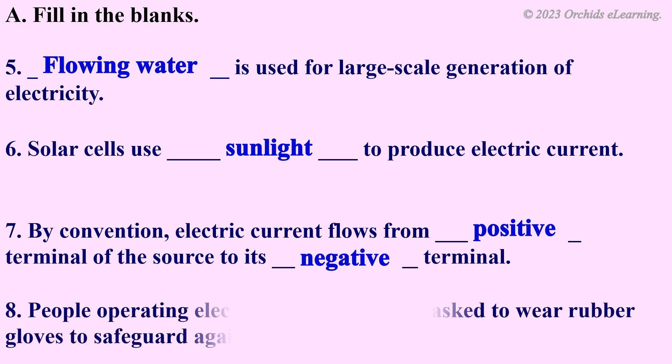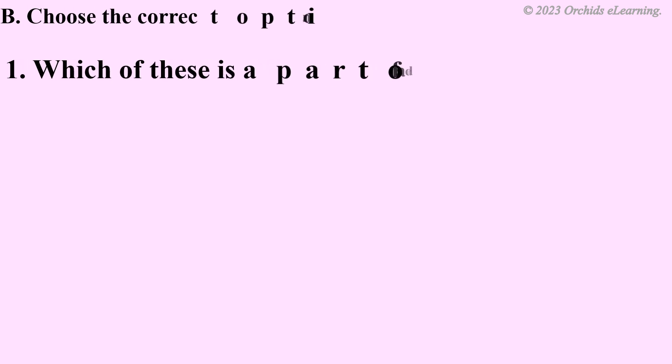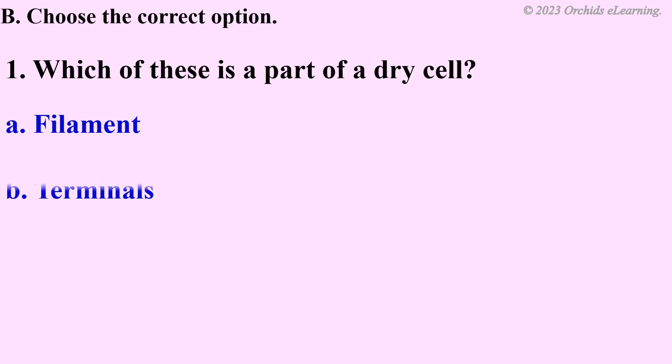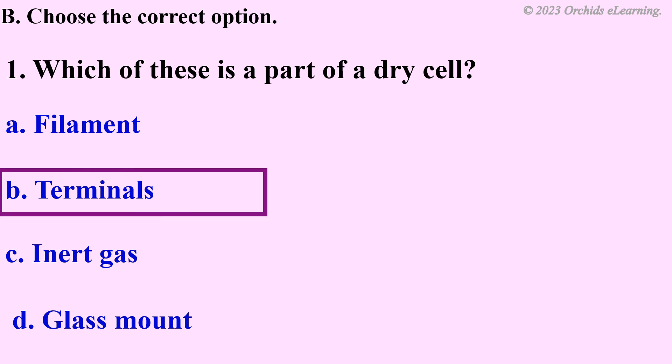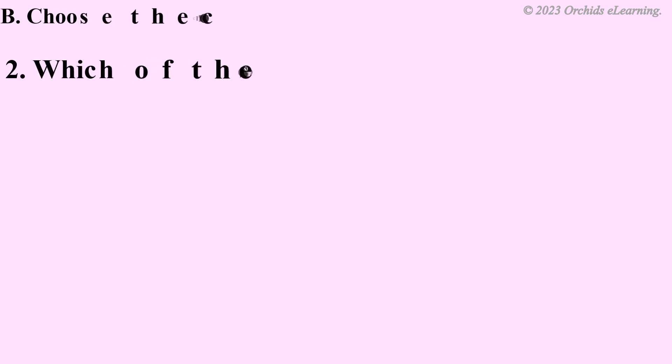People operating electrical equipment are asked to wear rubber gloves to safeguard against electric shocks. Choose the correct option. Which of these is a part of a dry cell? Terminals.